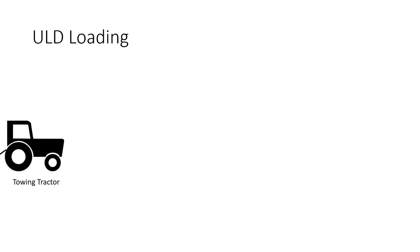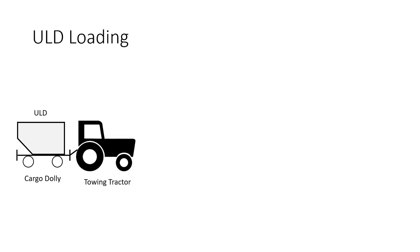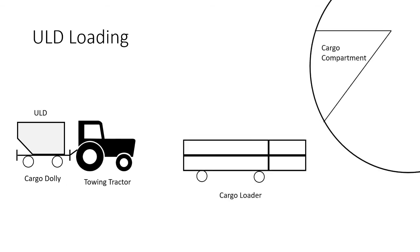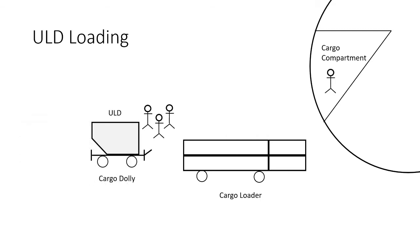It all starts when a towing tractor tows a cargo dolly to an aircraft stand where a cargo loader is already positioned. The cargo loader has been aligned with the aircraft and is ready to do its job. Airline or ground handling crew load multiple ULDs on the cargo loader based on its capacity with respect to how many ULDs can be loaded over it at once.